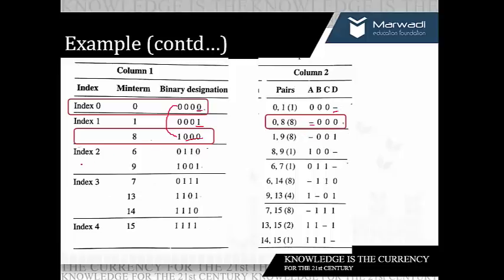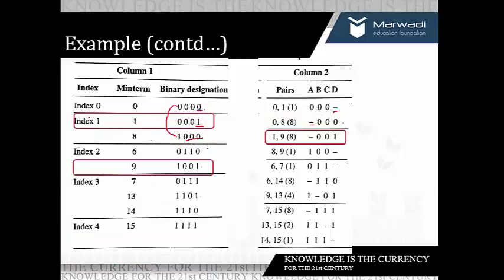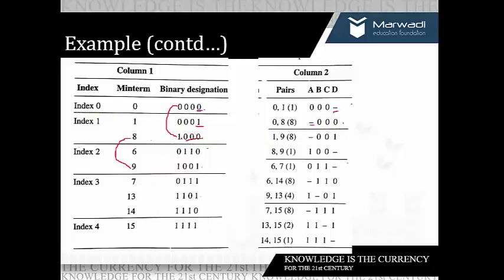Now comparing index 1 and index 2: on comparing 1 and 9, there is a change in the MSB bit, so we write -001. On comparing 8 and 9, there is a change in the LSB bit, so we write 100-. We continue comparing index 2 with index 3 and index 3 with index 4 to complete table 2.